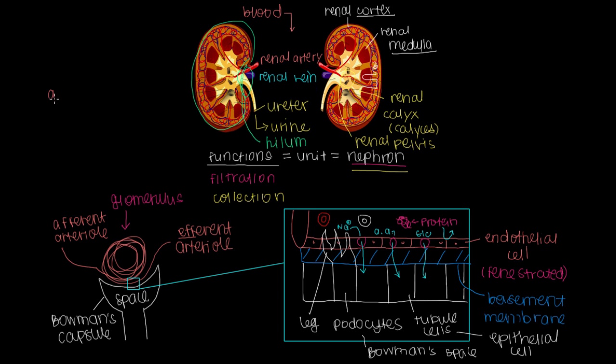What would happen if we look at our afferent and our efferent arterioles and we change the diameter of the vessel? What does that do to the rate of filtration? How does the diameter of our vessels change the rate of filtration?